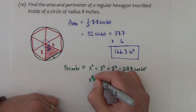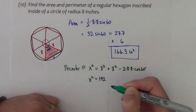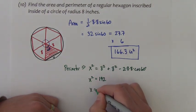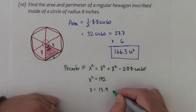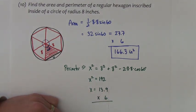So that came out to be 192. And if I take the square root of that, I'm just going to use a decimal again. This is 13.9. We take that times six, and we get 83.1 inches.